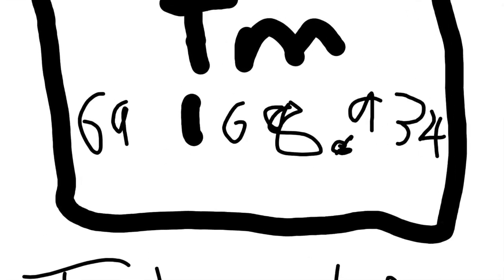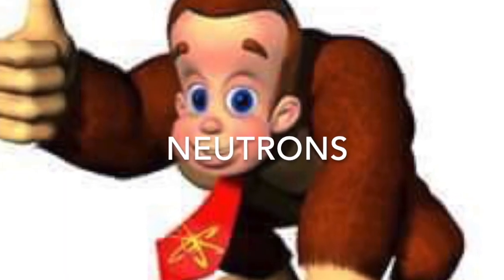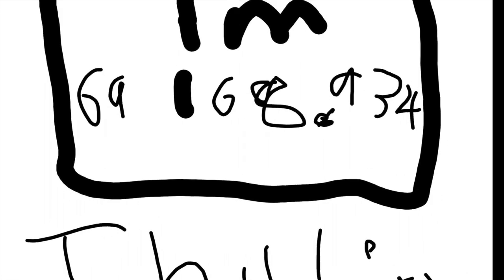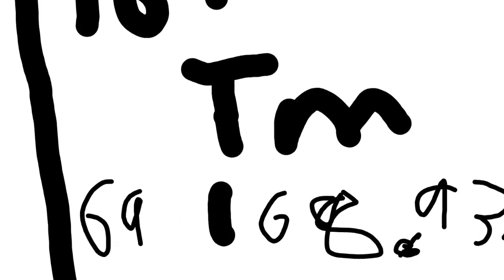Next up is the top left number, which is the mass number, which you can get by combining the number of protons and neutrons. You're probably wondering how you find the number of protons — well, you read the bottom left, because that's how the scientists decided to do it.